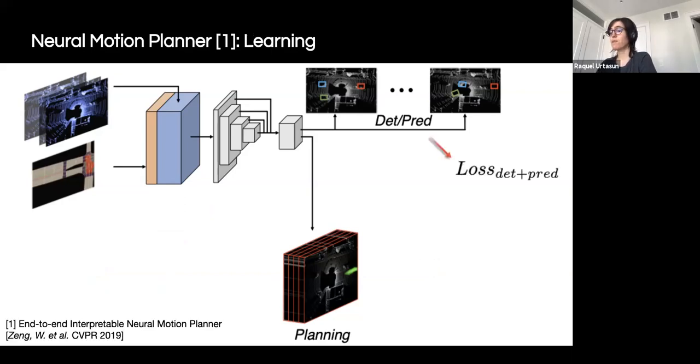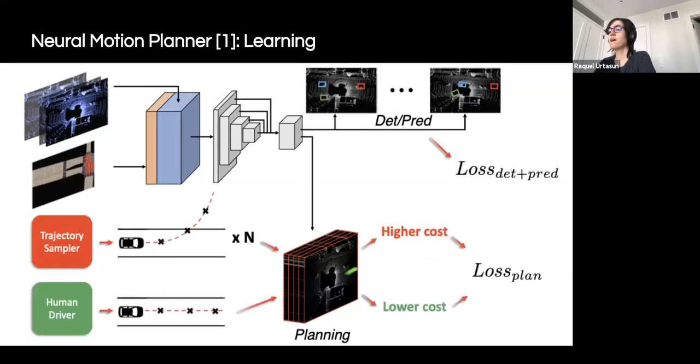We train our model end-to-end with a multitask loss, including detection, prediction, and motion planning losses. For detection and prediction, we use standard classification and regression losses. For planning, since we do not have ground truth supervision for the cost volume, we utilize imitation learning and encourage trajectories to have low costs close to the expert demonstrations. We also penalize trajectories that collide with objects or do not follow traffic routes.